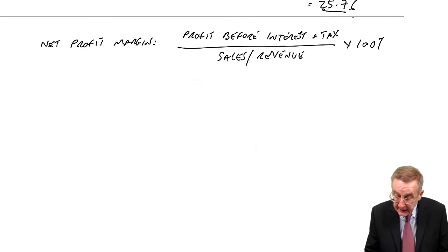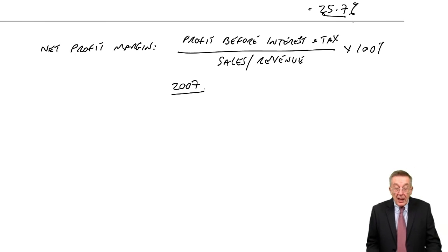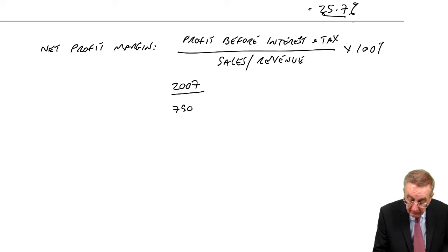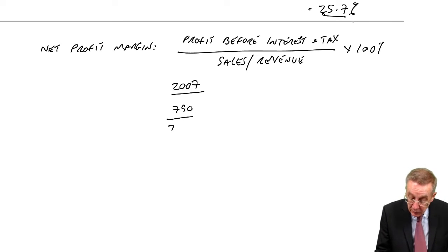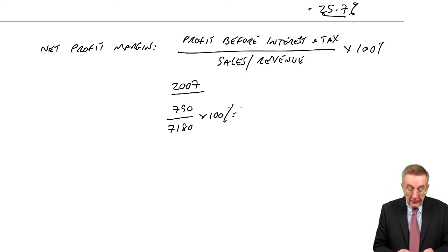So let's look at it in both years. In 2007, the operating profit, the profit before interest and tax, was 790. The total revenue, the total sales, was 7180. And so in percentage terms, it's 11%.